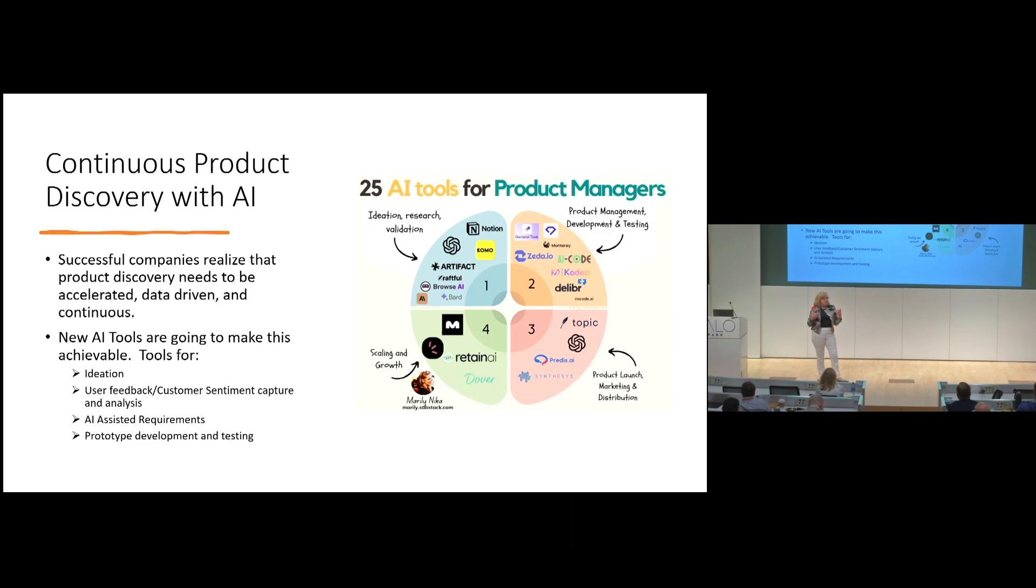How can software companies that aren't in the ivory tower of Silicon Valley really do this? I feel that we are at the cusp of a major transformation from a product management perspective, where there is a boatload of tools that are going to make this achievable for companies.